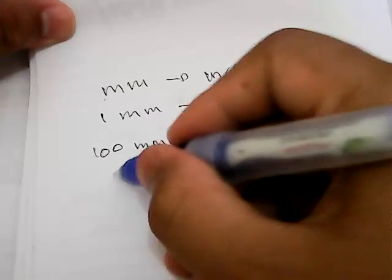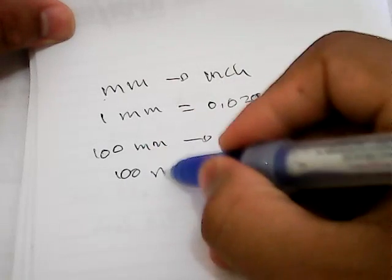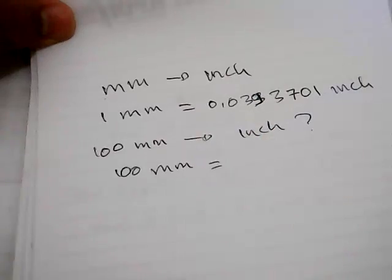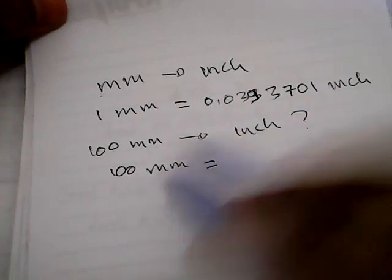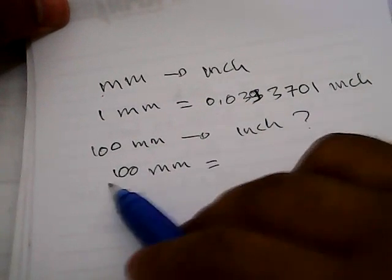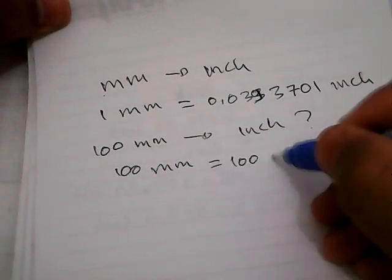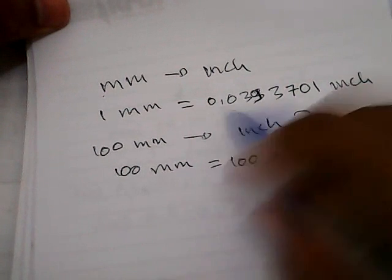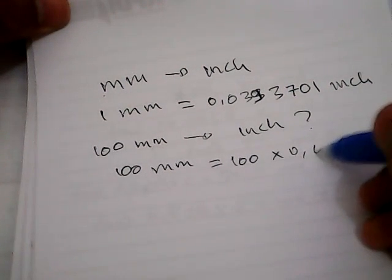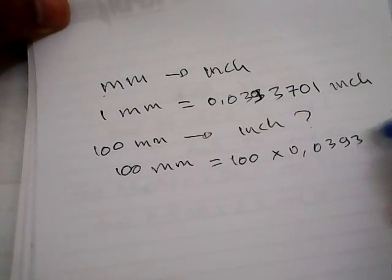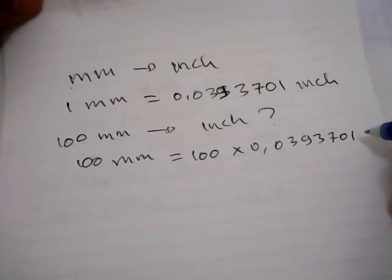You need to write 100 millimeters again and give it an equal sign. Then you need to write down 100 again over here and multiply it with this number: 0.0393701 inches.